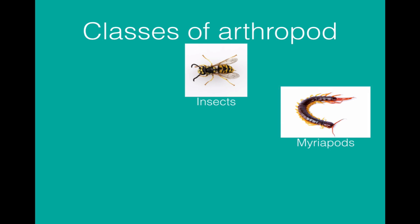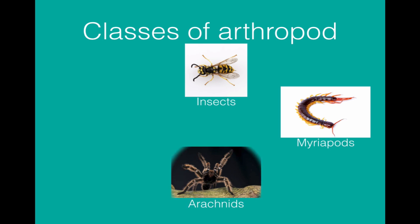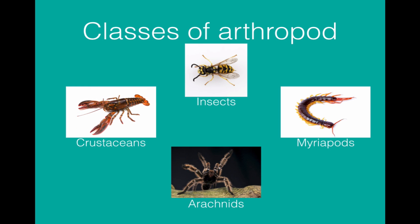We have myriopods — centipedes and millipedes. We have arachnids — spiders, mites, scorpions, etc. And crustaceans, which include shrimp, as well as woodlice and crabs, etc.